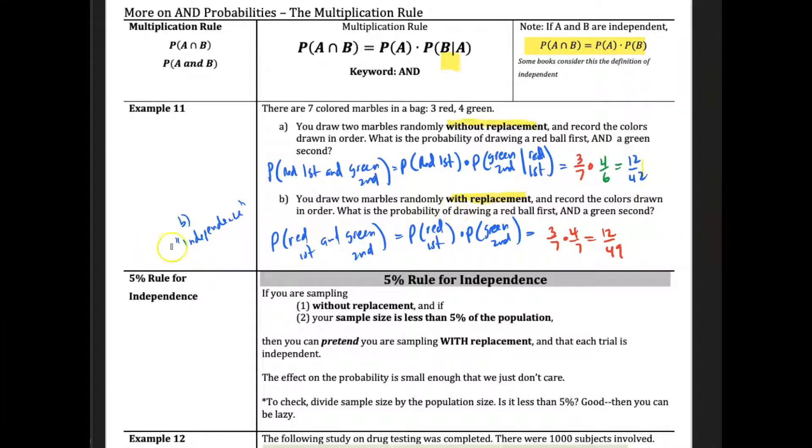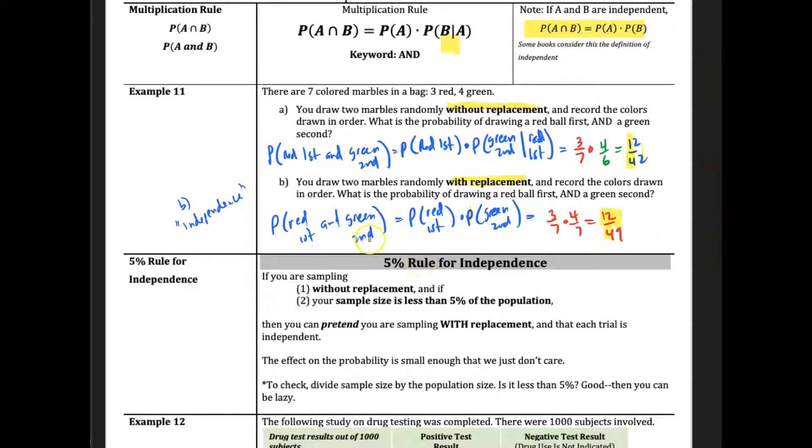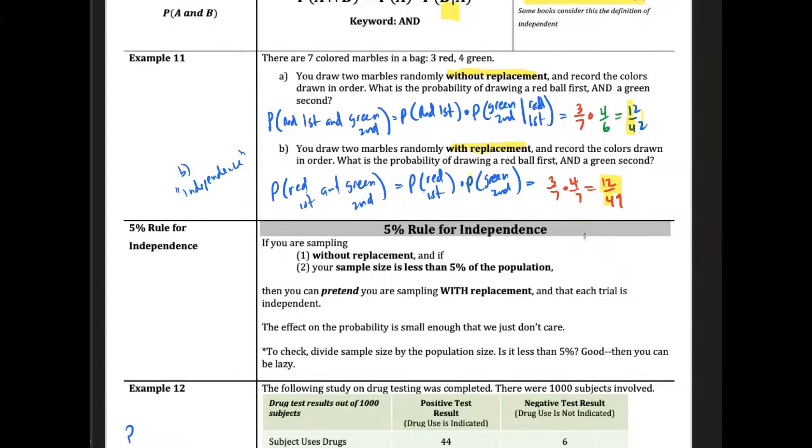Now, if you do with replacement, that means that we are going to put the marble back in place. In this case, this will be a scenario where the events are independent. The probability of getting a red first is 3 out of 7, and a green second is 4 out of 7. We put the marble back in, so notice we end up with a different answer. In this case, the first one does not affect the outcome of the second, so that's why we have 3 sevenths over 4 sevenths.